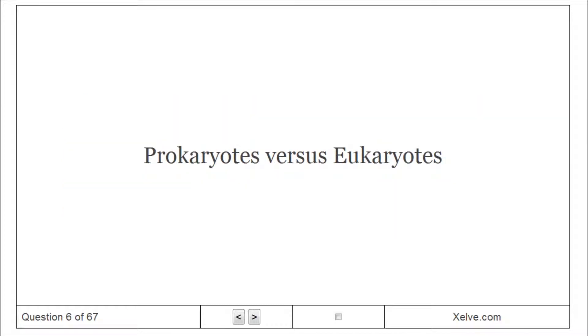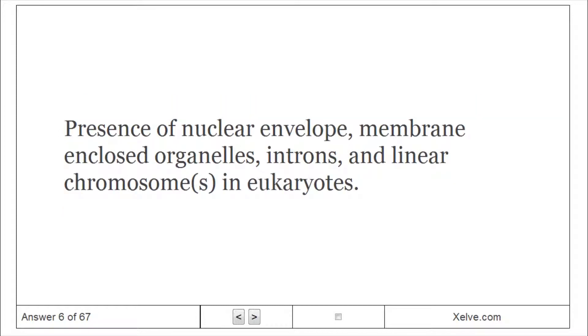Prokaryotes vs. Eukaryotes: eukaryotes are distinguished by the presence of a nuclear envelope, membrane-enclosed organelles, introns, and linear chromosomes.